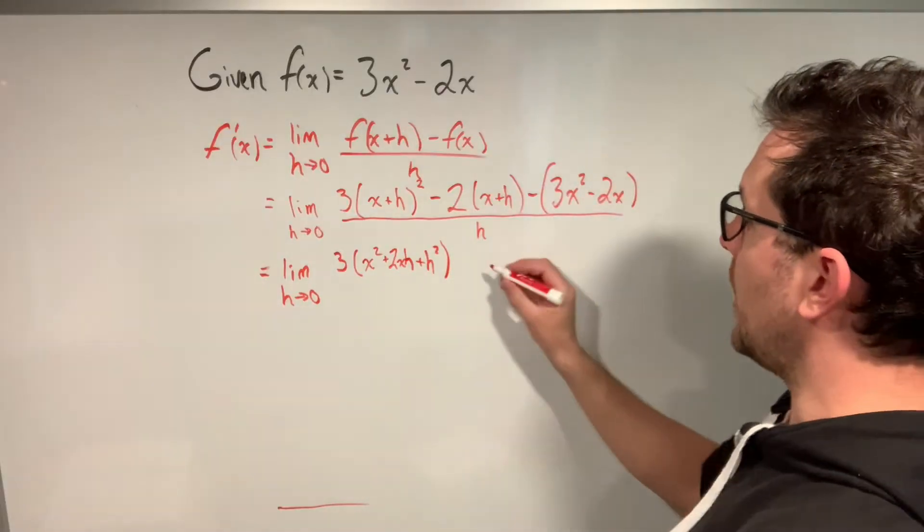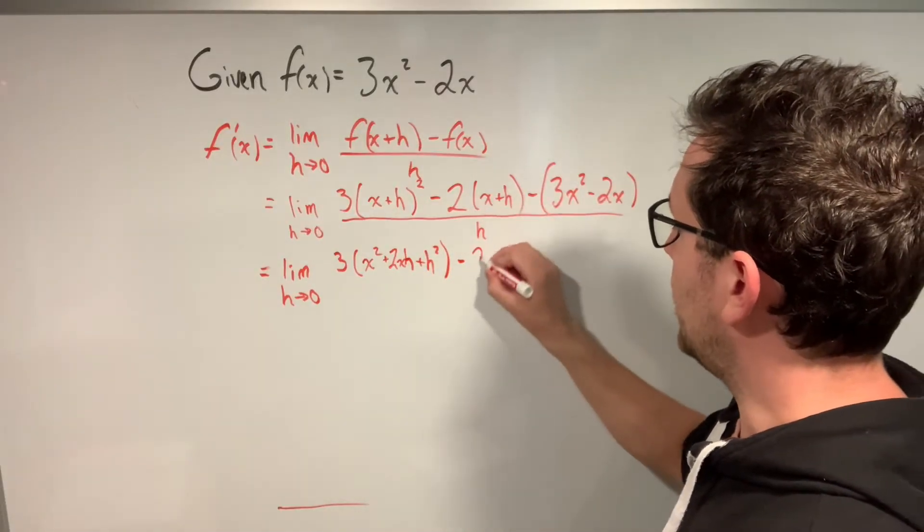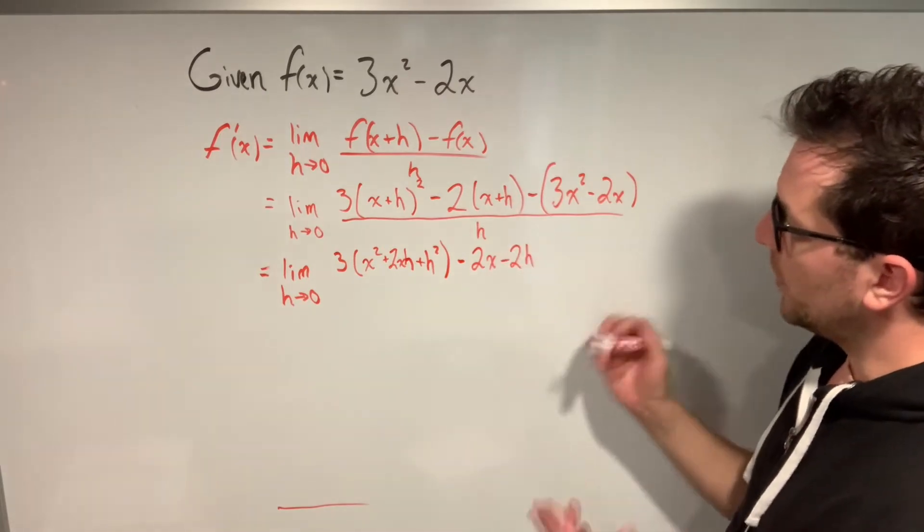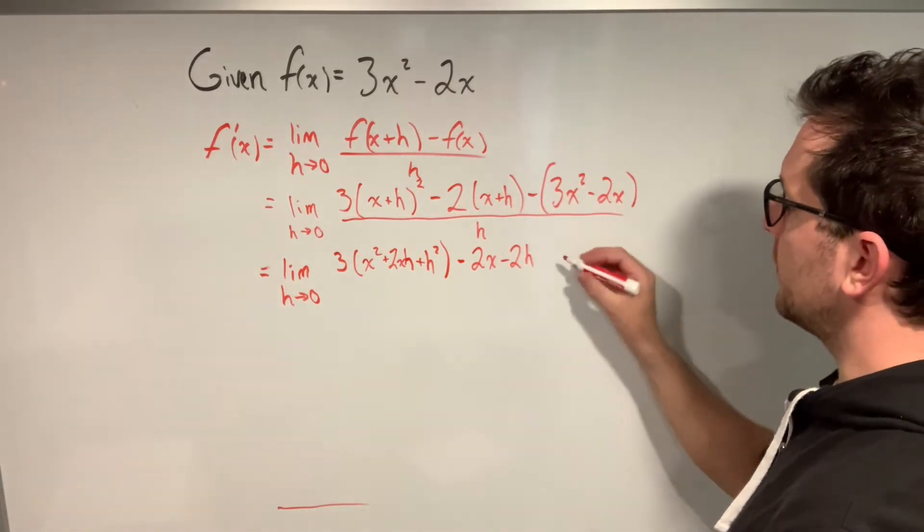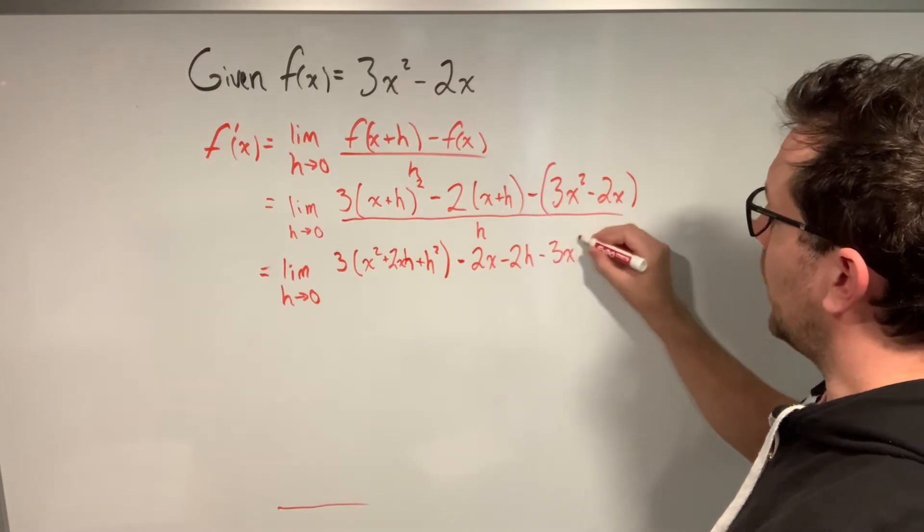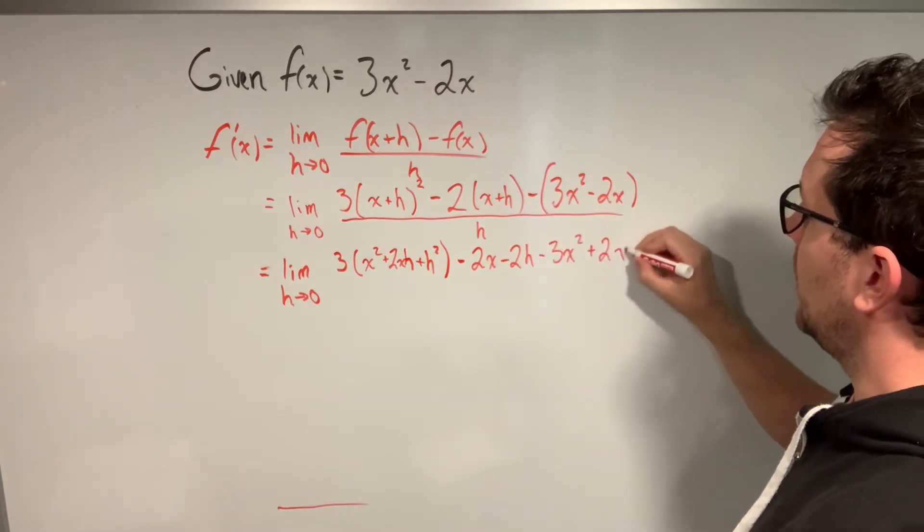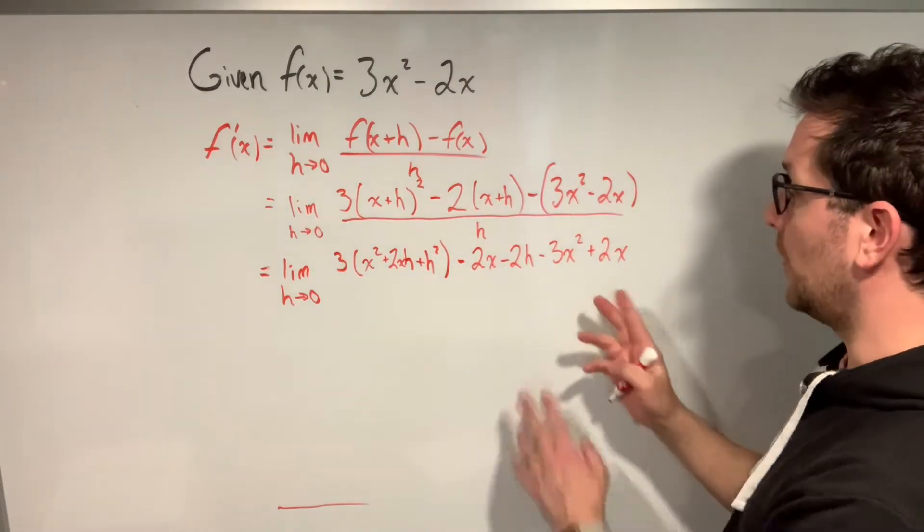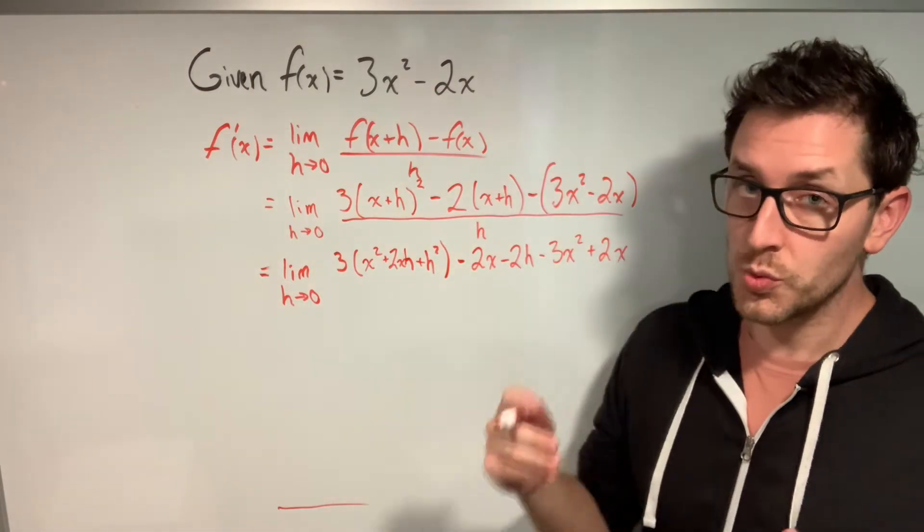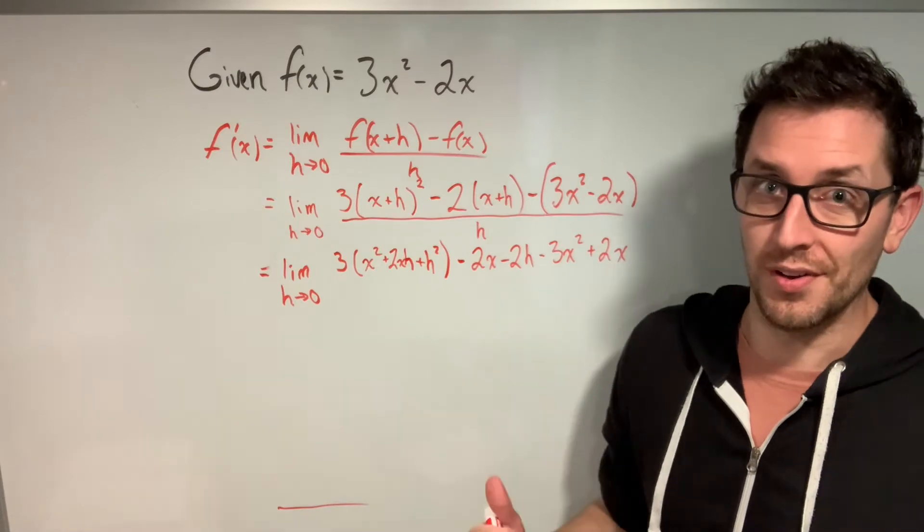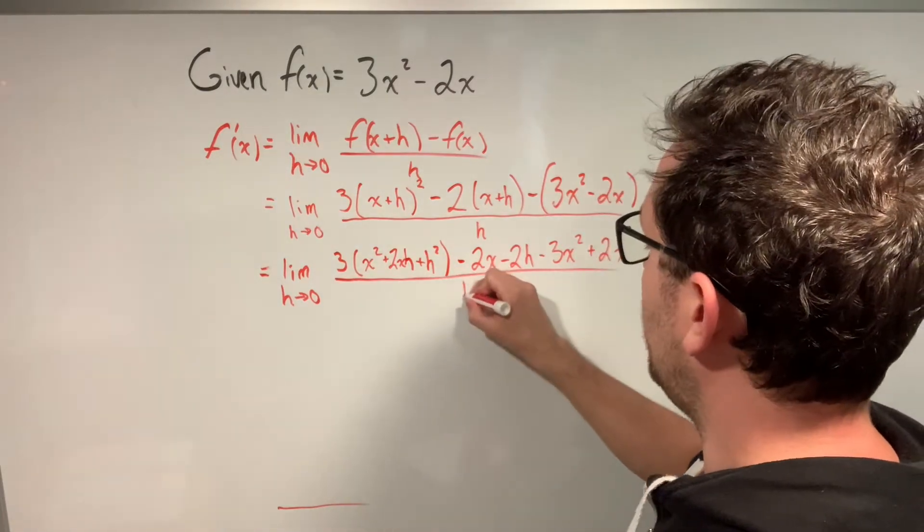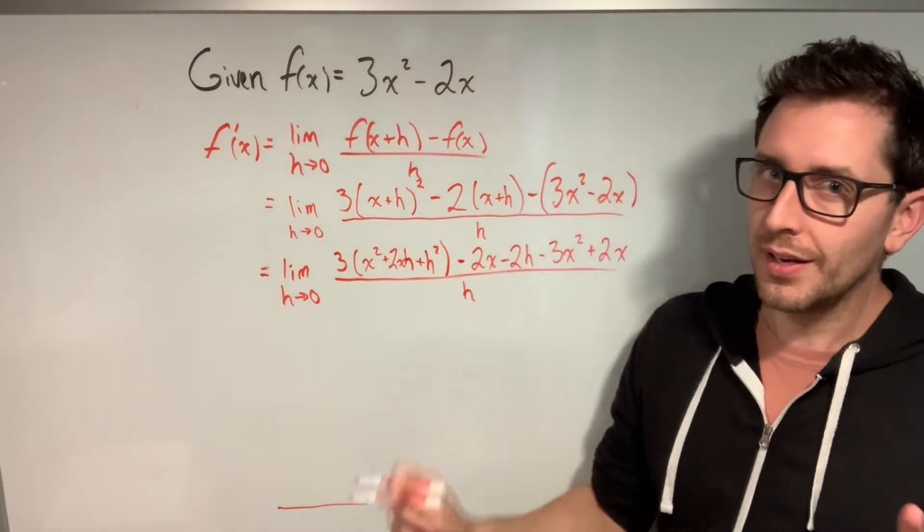From here, I'm going to distribute the negative 2 into this set of brackets to get -2x - 2h. And I'm going to distribute this negative into the brackets to get -3x² + 2x. And you can see why those brackets were important. If I didn't put those brackets here, I would get a mixed up sign, which would seriously impact our derivative. I'm then going to divide everything by h yet again, and still just kind of leave it alone. We're not ready to deal with h yet.